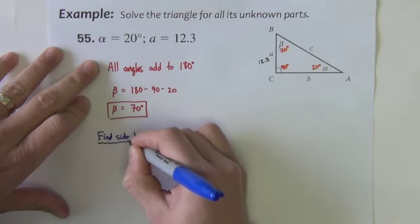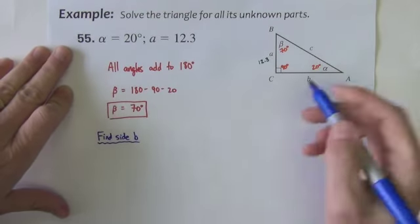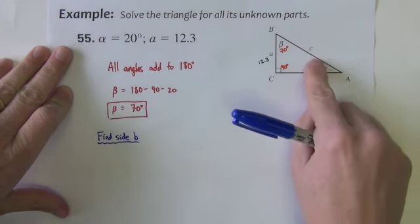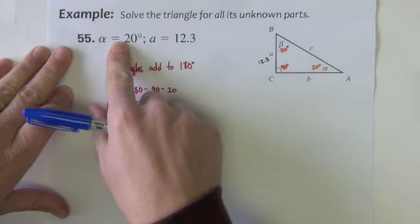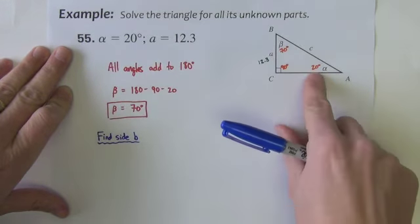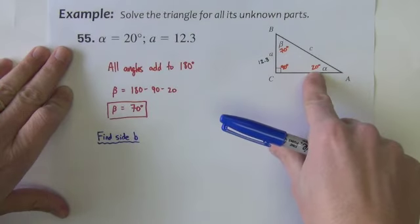So we're going to look for side B. Now we need to pick one of the acute angles. I'm going to go with angle alpha just because it was given but I could just easily choose beta here. So if I choose alpha, this angle here,